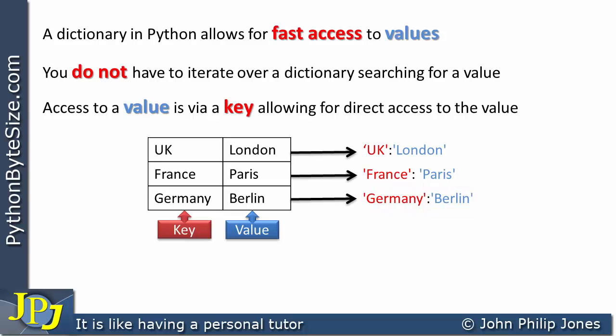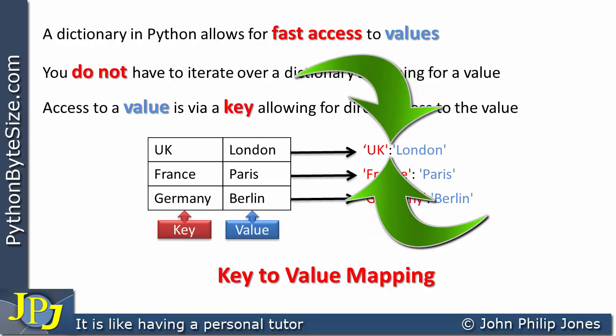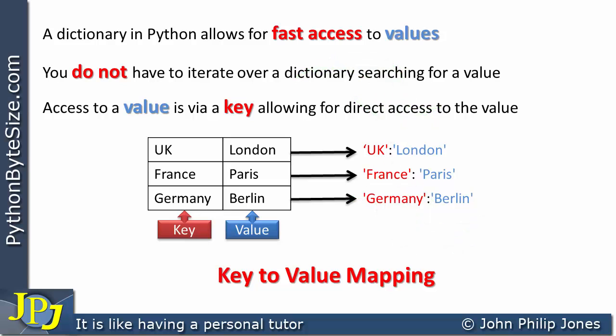When we talk about dictionaries in Python, you will often hear people refer to a key-to-value mapping, where the key UK is mapped to London. The colon is effectively acting as the thing that maps UK to London, and here we can see France is mapped to Paris.